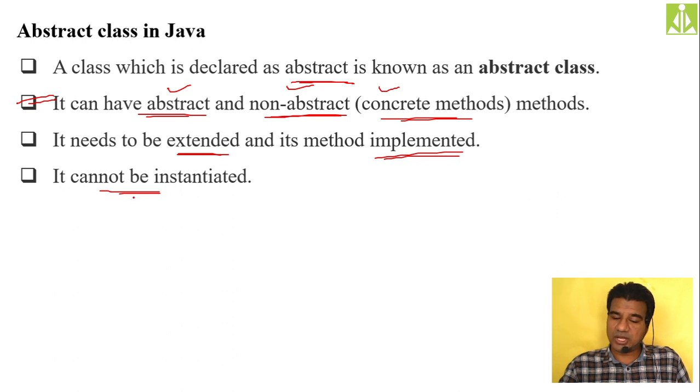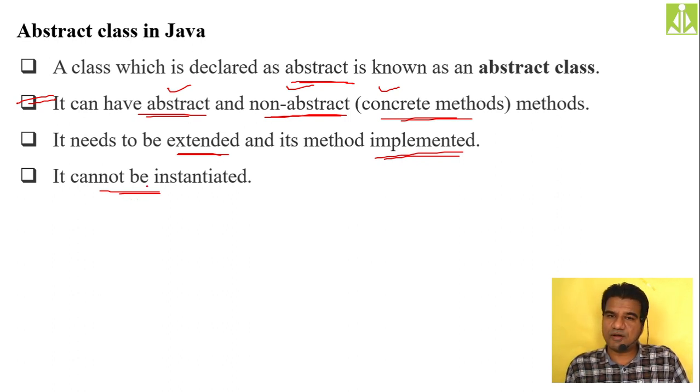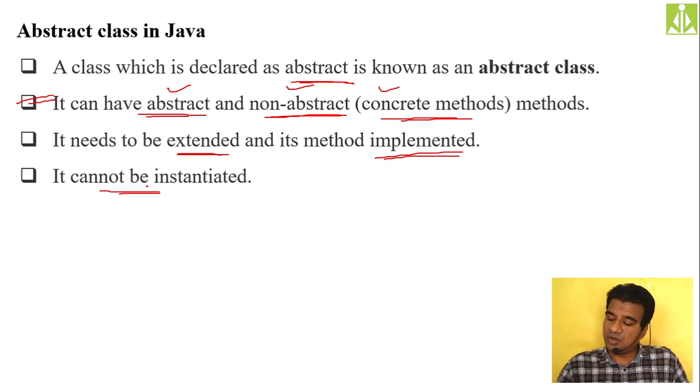An abstract class cannot be instantiated — you cannot create a full object of an abstract class. You can use it as a reference, but you cannot create the object. Using it as a reference is different from instantiation.